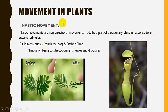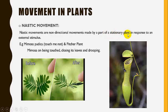We have seen different types of movement in plants. The first movement is nastic movement. These are non-directional movements made by a part of a stationary plant in response to an external stimulus. An example of nastic movement is the response to touch.